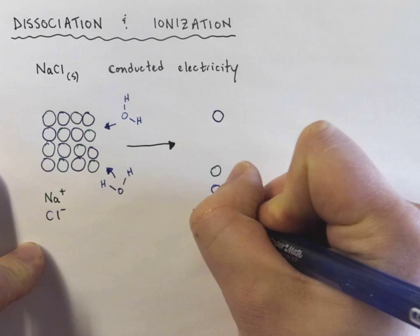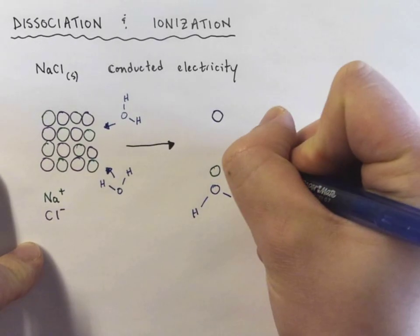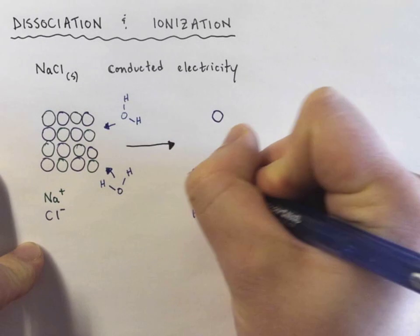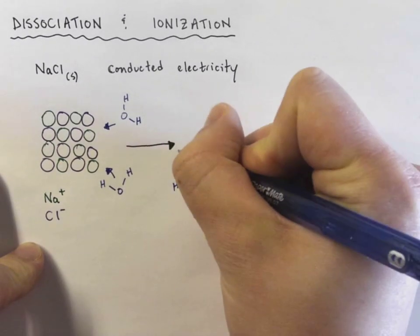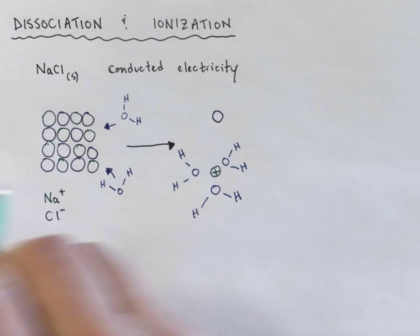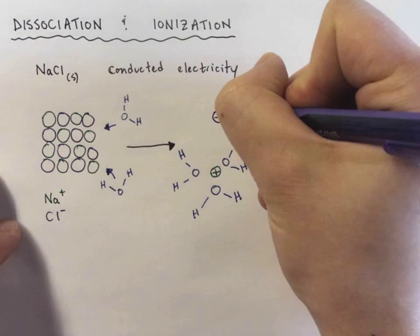Sodium ions are positively charged, and the slightly negative oxygen of a water molecule will orient itself around the positive sodium ion. So this is positive and these are negative.